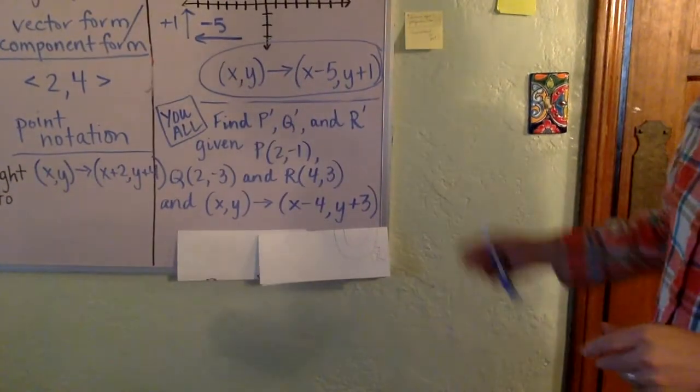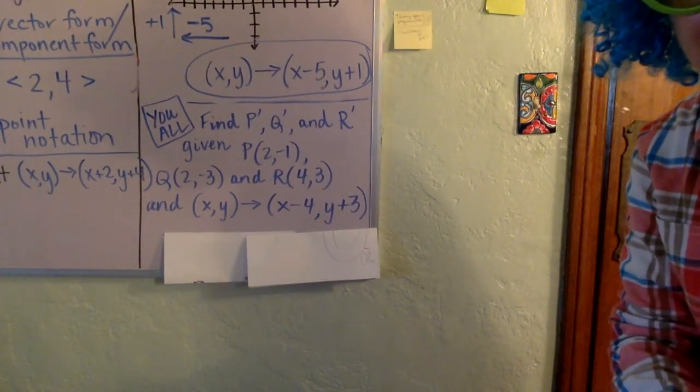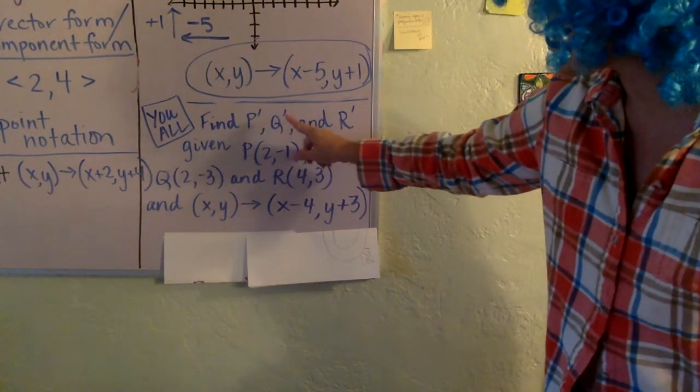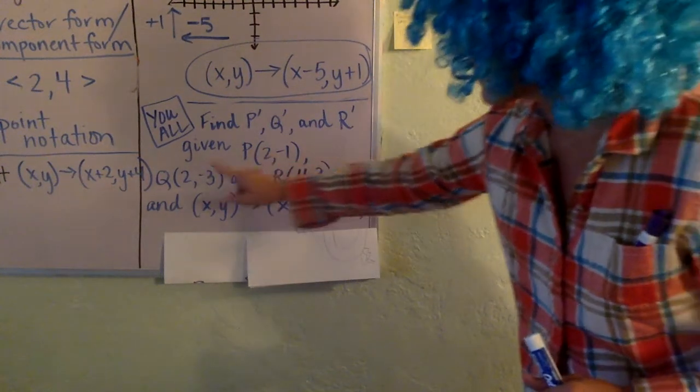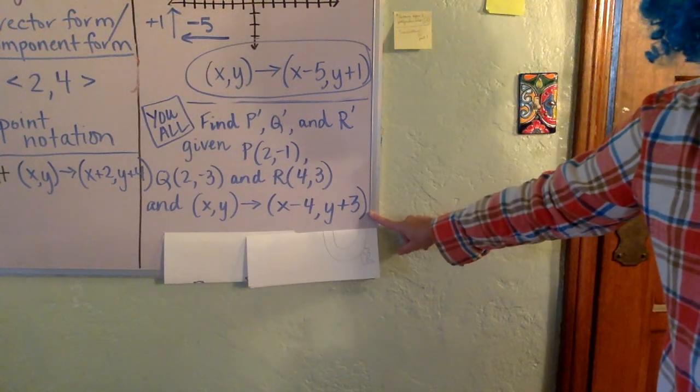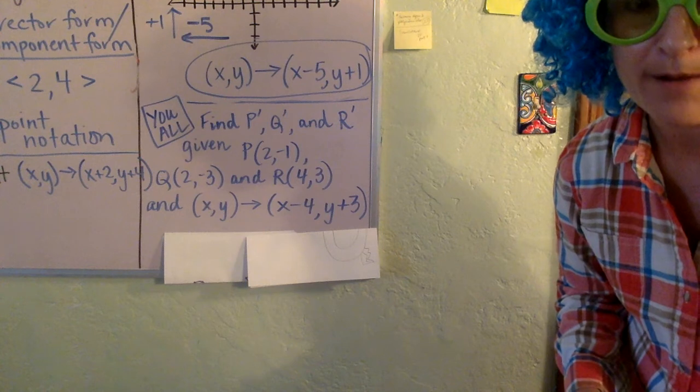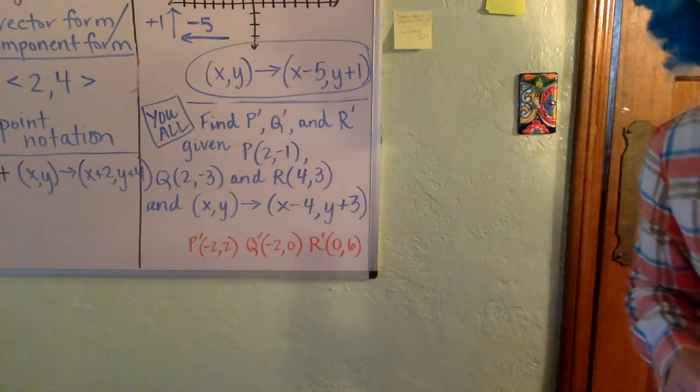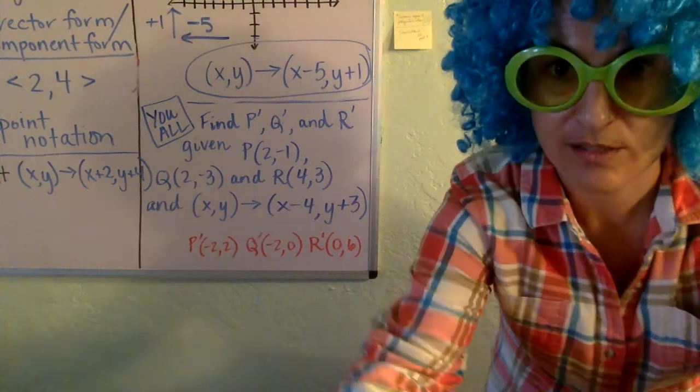All righty, friends. Turner tells me you also do a U-all problem, so could you take a look at this one? Why don't you go ahead and hit pause for a second. Give it a shot. You want to find P' location, Q' location, and R' location if you start out here, here, and here, and you undergo a translation such that this occurs, okay? So see if you can find the coordinates of P', Q', R'. Pause it. Okay, and if you did that correctly, I think you should get this. So good day, and Turner has some practice for you.